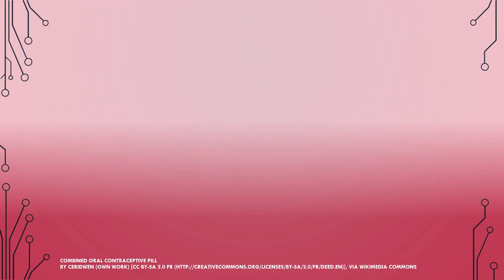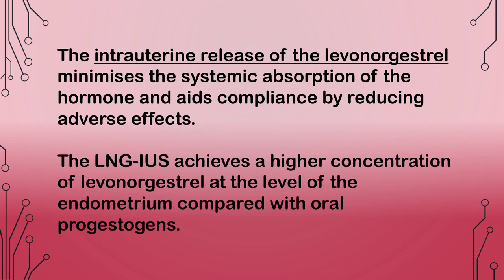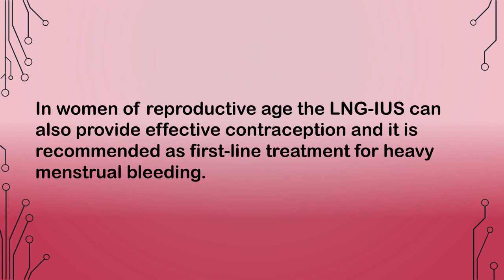Progestogens have been advocated to treat endometrial hyperplasia because they modify the proliferative effects of estrogen on the endometrium. Oral progestogens can have significant adverse effects and norethisterone at high dose has similar contraindications to combined contraceptive pills. The intrauterine release of levonorgestrel minimizes systemic absorption and aids compliance by reducing adverse effects. The LNG-IUS achieves a higher concentration of levonorgestrel at the level of the endometrium compared with oral progestogens. In women of reproductive age, it can also provide effective contraception and is recommended as first-line treatment for heavy menstrual bleeding.